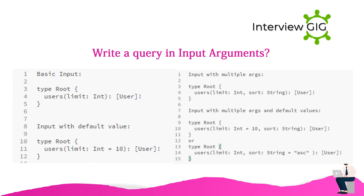Write a query with input arguments. Basic input: type root { users(limit: Int): [User] }. Input with default value: type root { users(limit: Int = 10): [User] }. Input with multiple args: type root { users(limit: Int, sort: String): [User] }. Input with multiple args and default values: type root { users(limit: Int = 10, sort: String): [User] } or type root { users(limit: Int, sort: String = "asc"): [User] }.